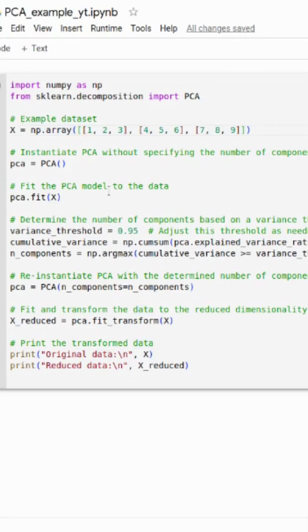After that we just initiate our PCA model and we try to fit the data in our PCA model without any n_components. So for the calculation of the components we use a variance threshold like 0.95.